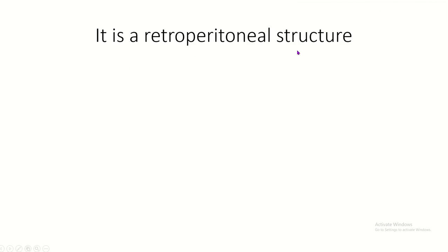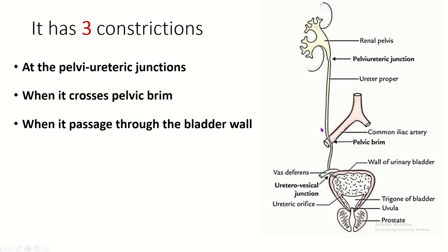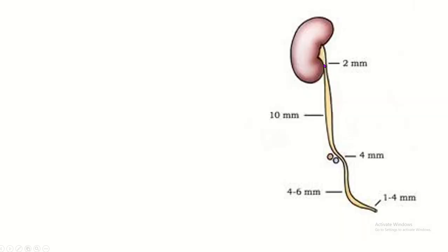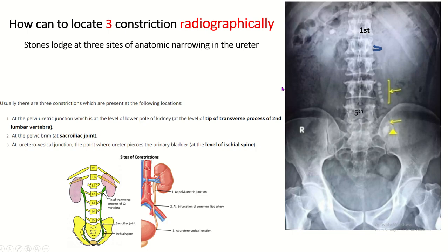The ureter is a retroperitoneal structure. It has three constrictions: at the pelviureteric junction, when it crosses the pelvic brim, and when it enters the urinary bladder. The diameter at the first constriction is 2 millimeters, the second constriction is 4 millimeters, and the intramural part is 1 to 4 millimeters.